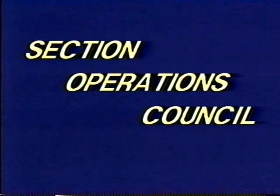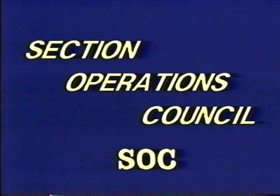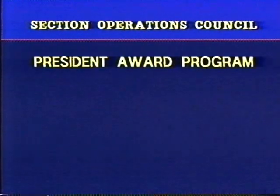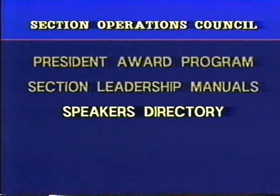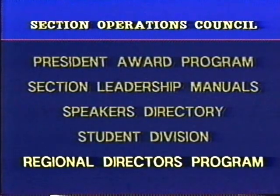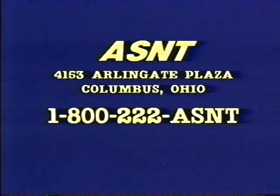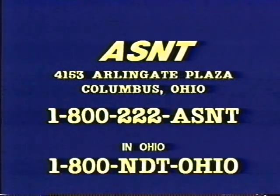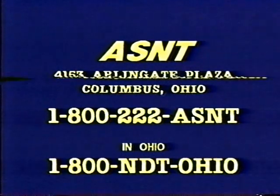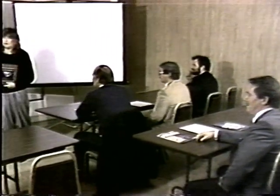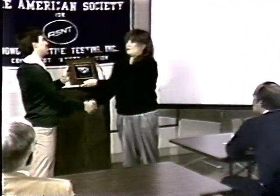The Section Operation Council (SOC) provides a direct source of aid to local sections. Through SOC, information can be gathered pertaining to special award programs such as the President's Award Program, Section Leadership Manuals, Speakers Directory, Student Division Information, and the Regional Directors Program. ASNT Headquarters wants to answer any and all of your questions. There's a toll-free number available: 1-800-222-ASNT, or in Ohio, 1-800-NDT-Ohio. It's at the local level that the member feels truly an ASNT member, with all of the rights and privileges of membership. The success of each section is not dependent upon one person — it's a team effort. That effort, the involvement, commitment, and determination of your members, will provide the foundation on which ASNT will continue to grow.